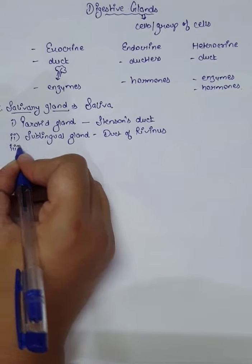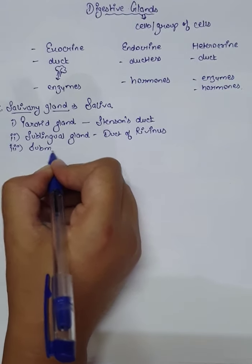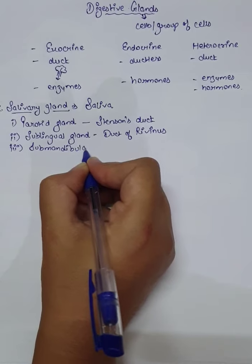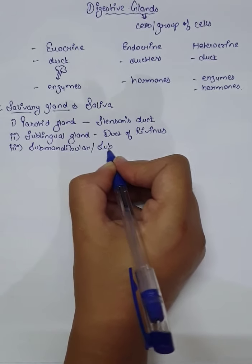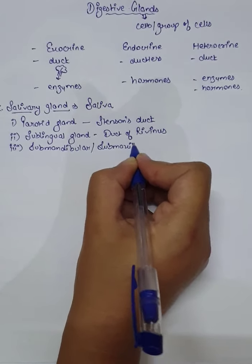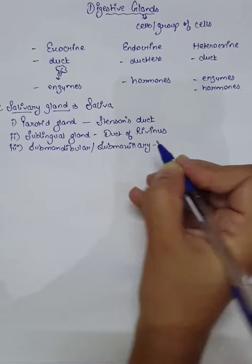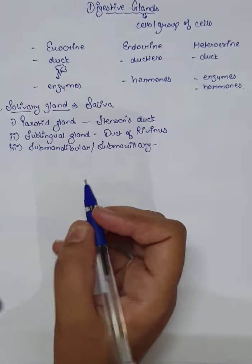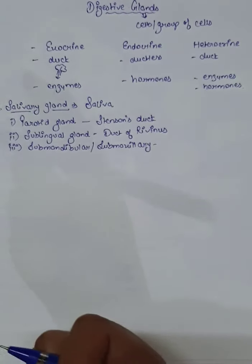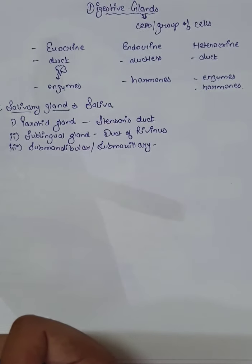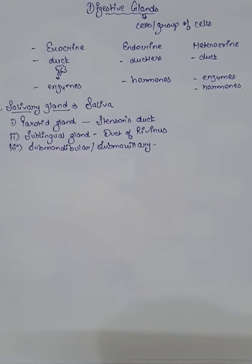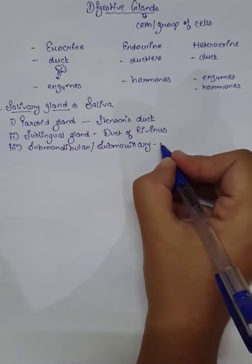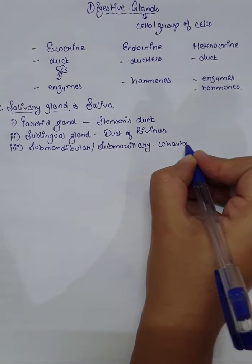The third one is the Submandibular gland, sometimes called Submaxillary. It is present near the Sublingual gland but at an angle of our lower jaw. Its opening is near the lower incisors, and the duct is known as Wharton's duct.